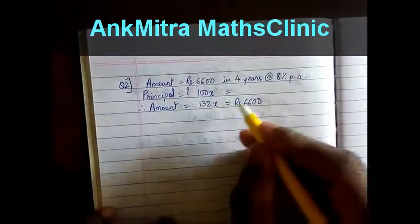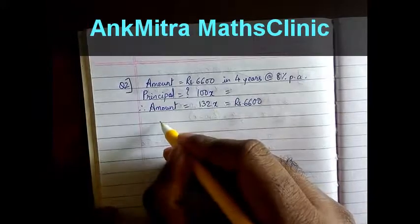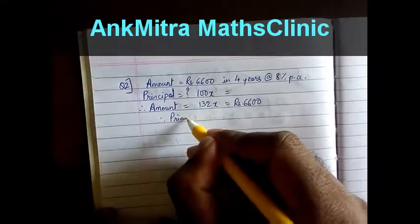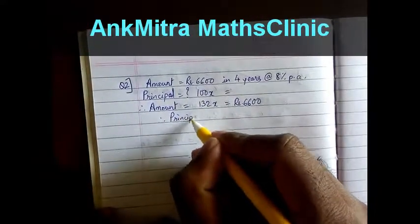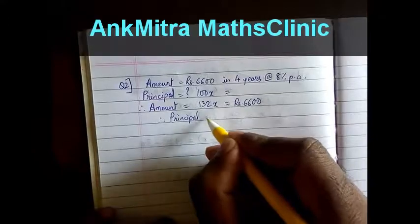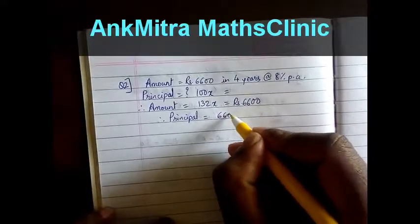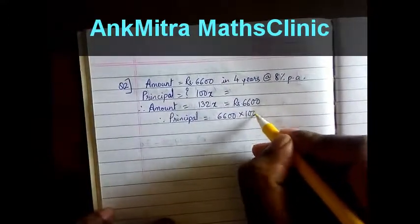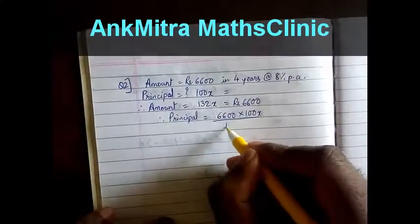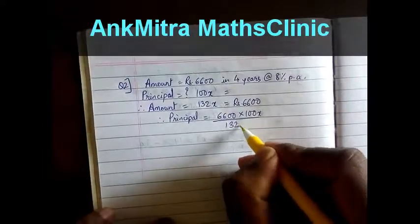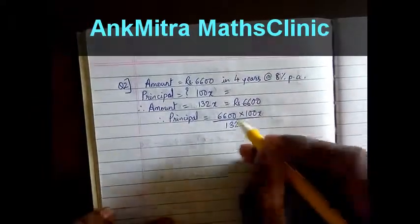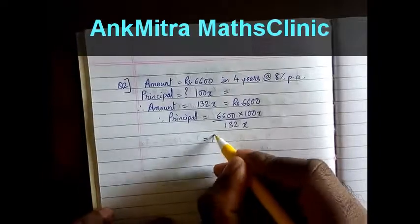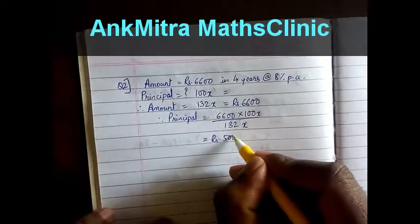We can just cross multiply and find the answer. Therefore, we get principal is equal to 6600 multiplied by 100x upon 132x. Simplifying this, we get the principal as Rs.5000.